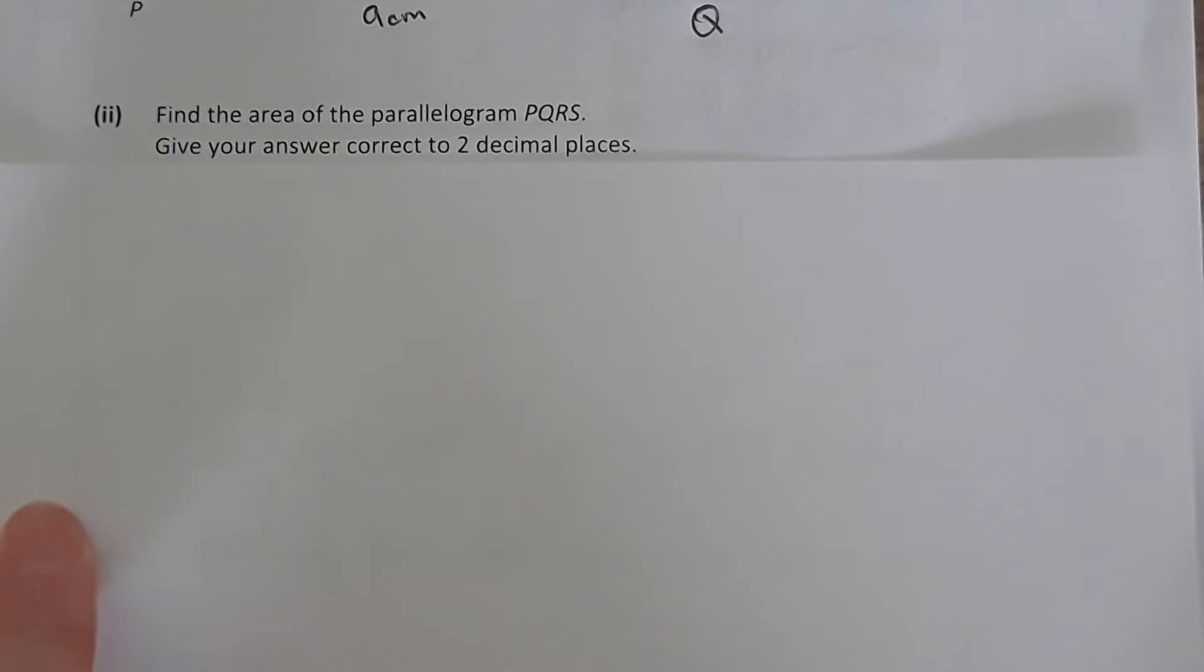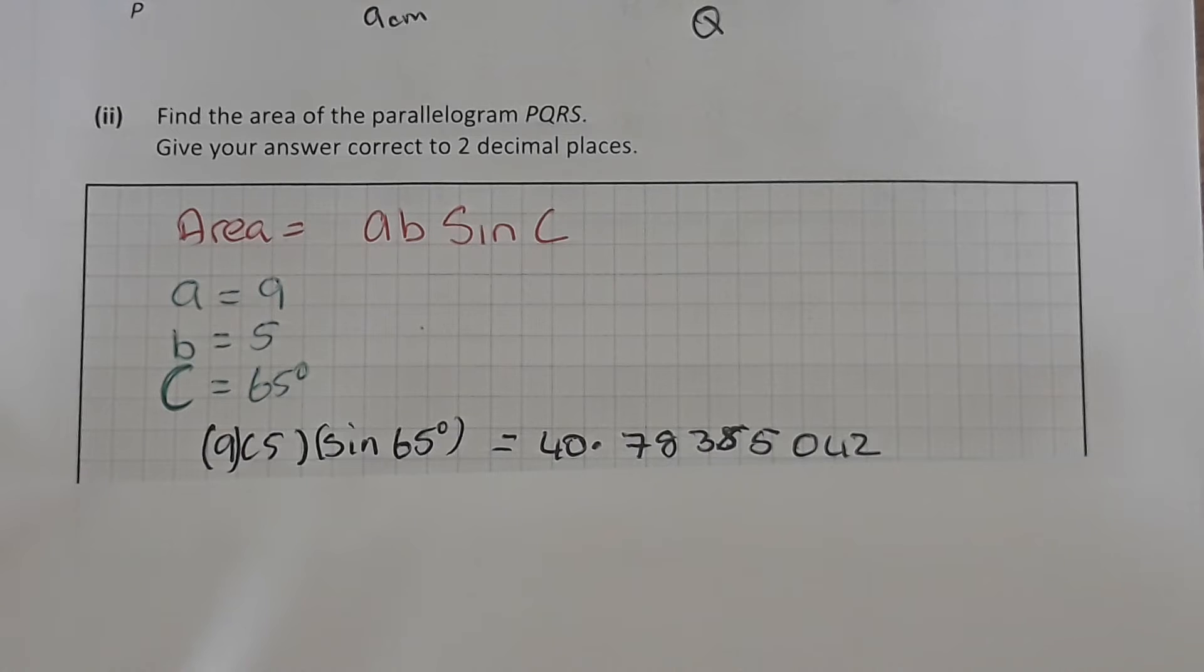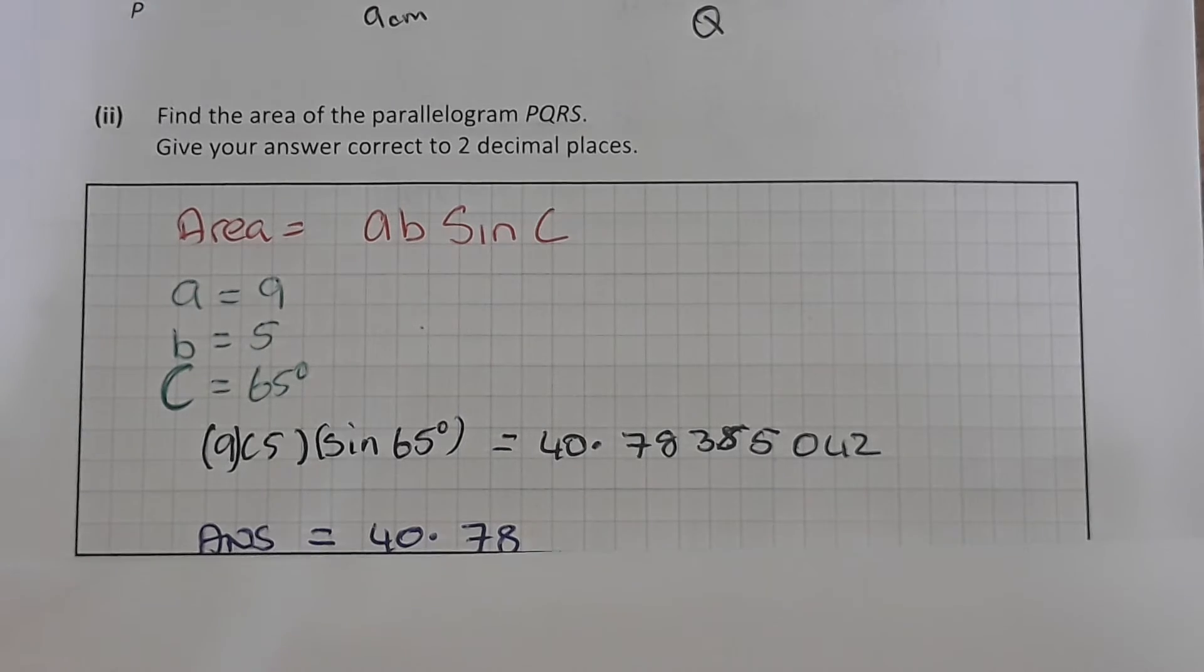Now the next bit is find the area of the parallelogram PQRS and give your answer correct to two decimal places. So to find the area you're going to use AB sin C, because you have the angle which is 65 degrees, and you'll find that in your formula tables. So A is 9, B is 5, and C is 65 degrees. So just substitute that in. Use brackets, 9 by 5 by sin 65, and you get 40.78385042. Round that up, it says to two decimal places, and your answer is 40.78.